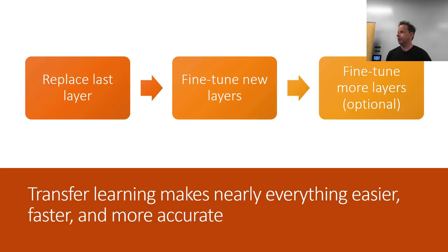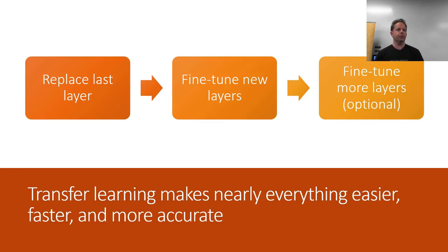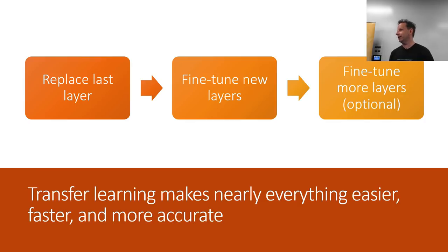The second thing we learned is about transfer learning, and it's basically the most important single thing to be able to do to use deep learning effectively. Nearly all courses, nearly all papers, nearly everything in deep learning education and research focuses on starting with random weights, which is ridiculous, because you almost never would want to or need to do that. You would only want to do that if nobody had ever trained a model on a vaguely similar set of data with an even remotely connected kind of problem — which almost never happens.